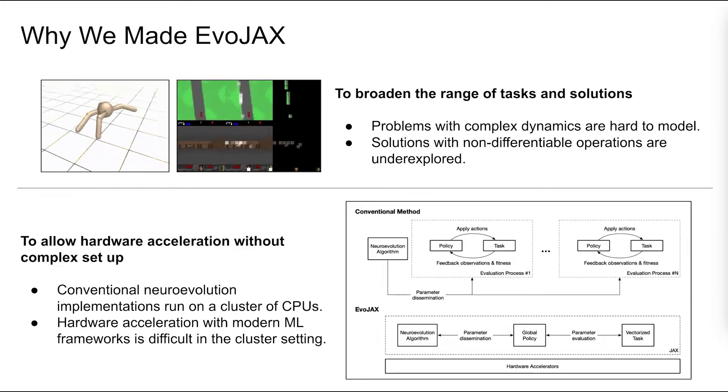To this end, we employ JAX, a modern machine learning framework developed by Google. JAX runs on a wide range of hardware. It is fast and provides features such as auto-vectorization and device parallelism. With it, it's possible to implement neural evolution training pipelines in a much simpler way.